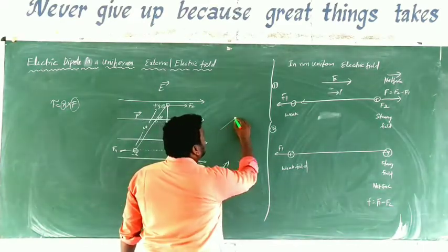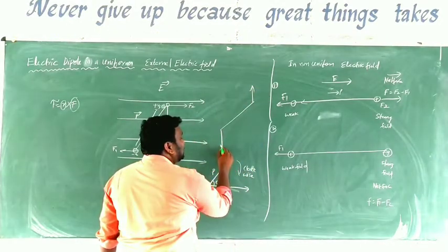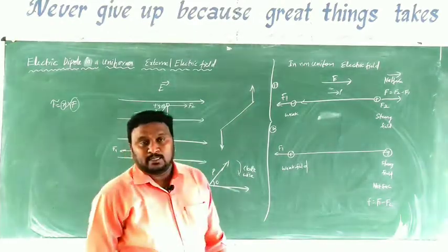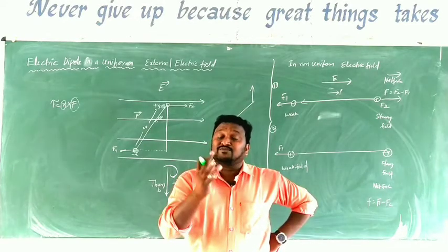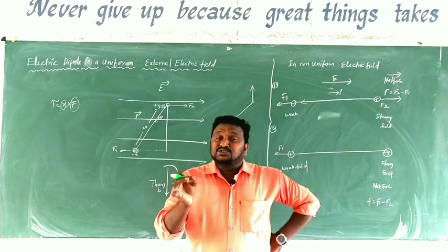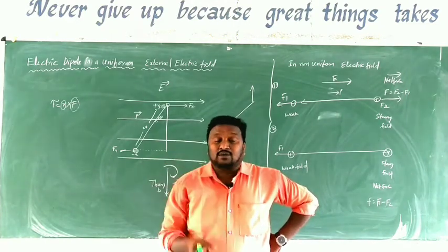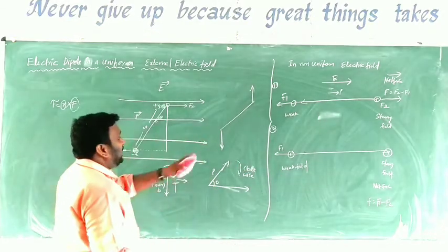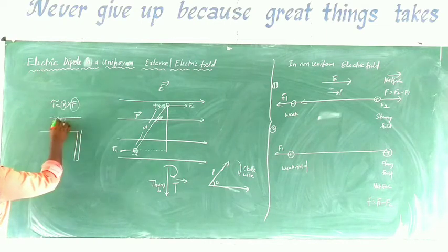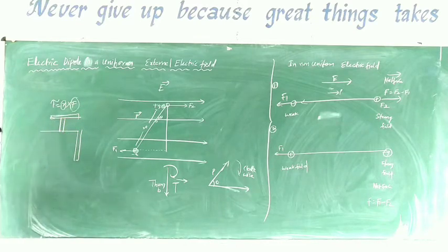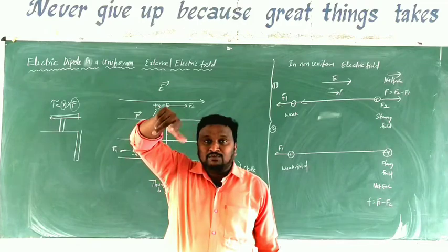Consider one object on which two equal forces act — one vertically downward and one vertically upward — at two different points. When two equal forces act on a body at different places they produce a couple or torque. For example, this is a water tap: to rotate the tap we hold it and apply force at two ends.